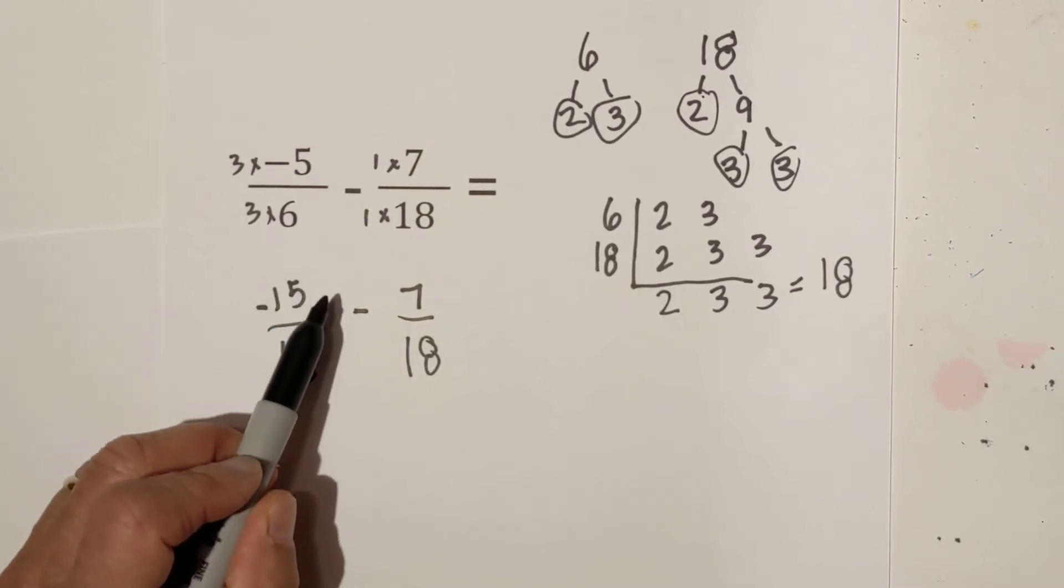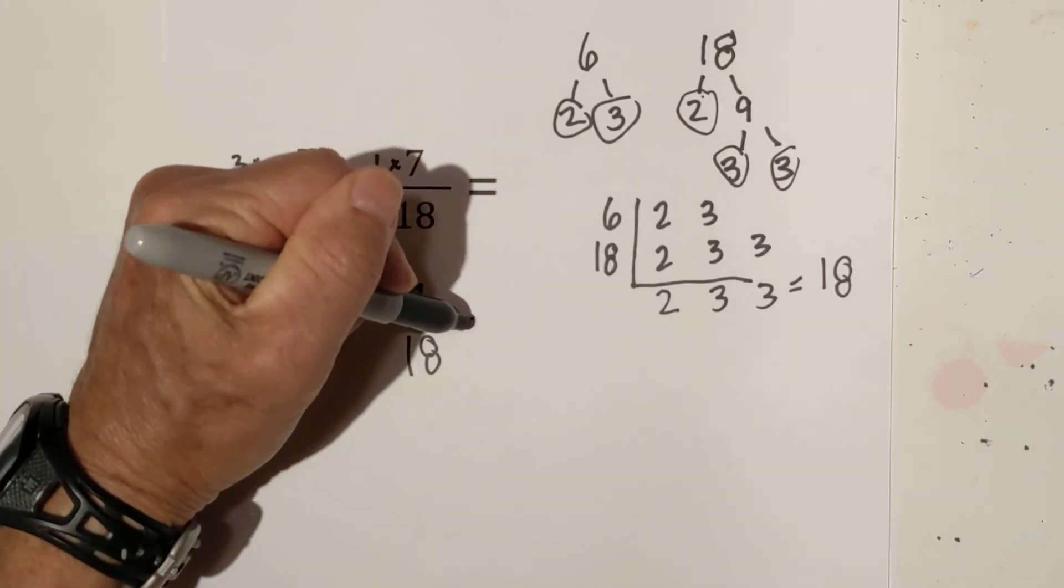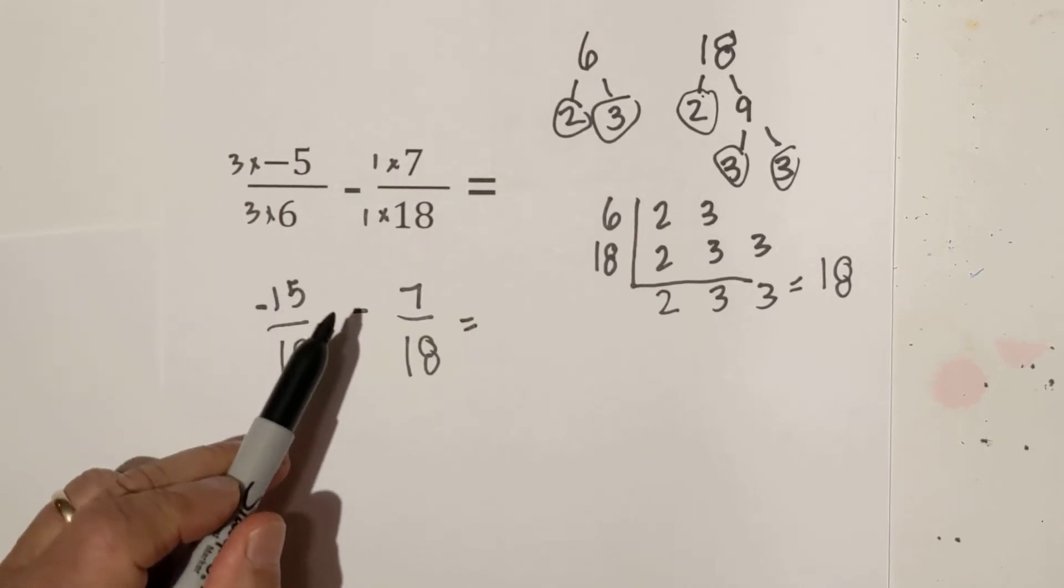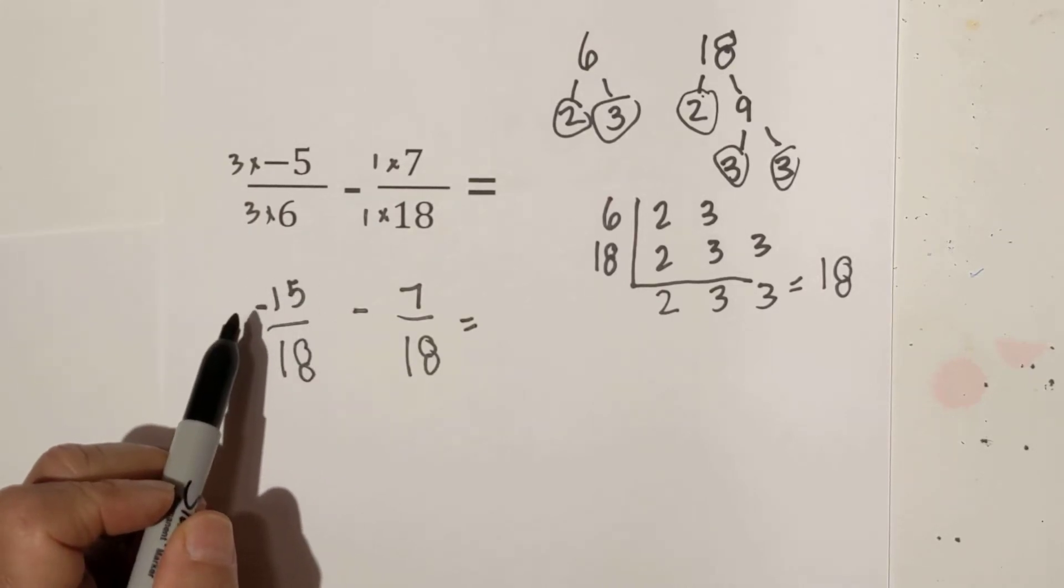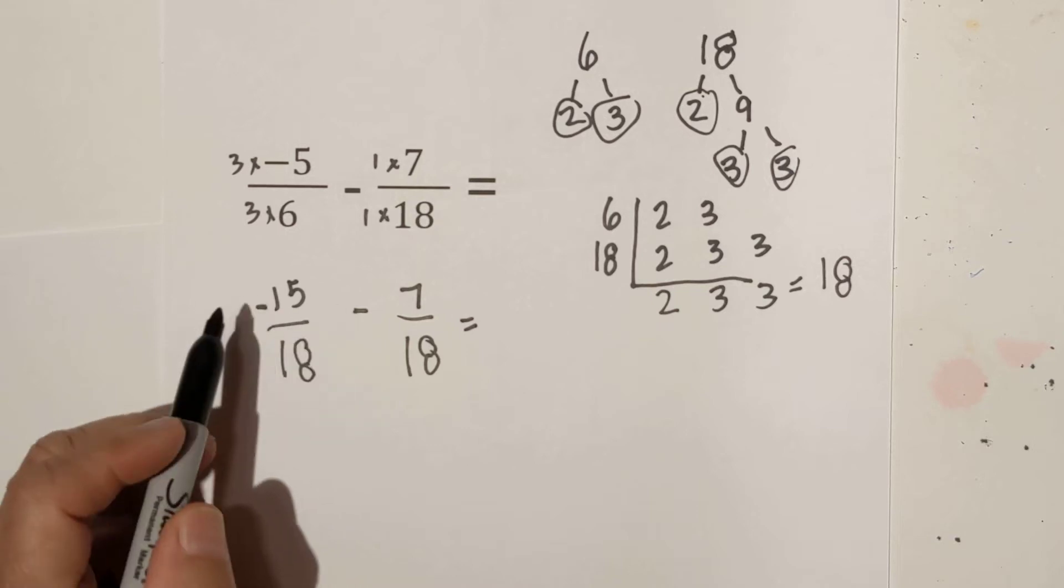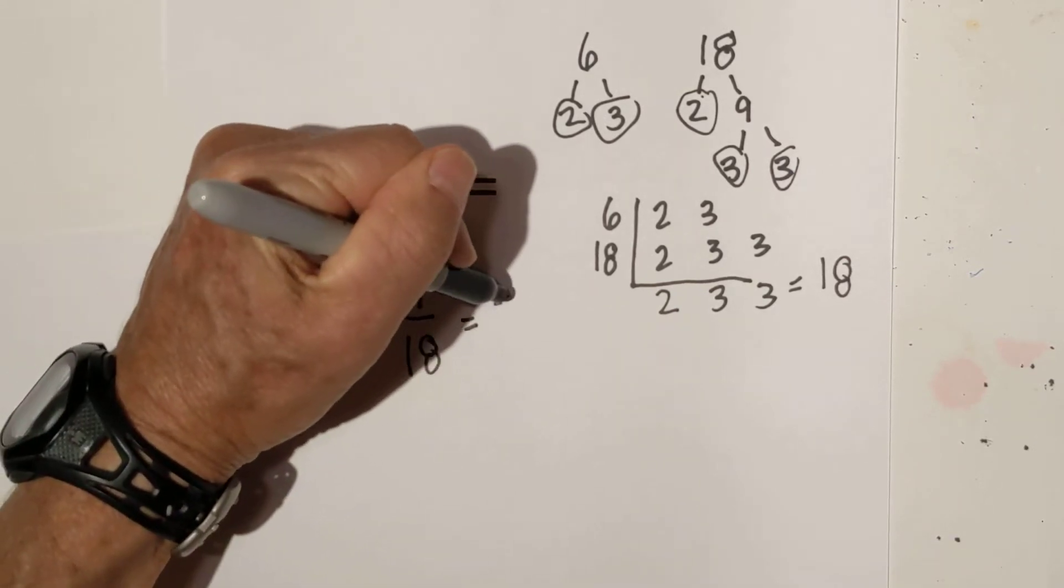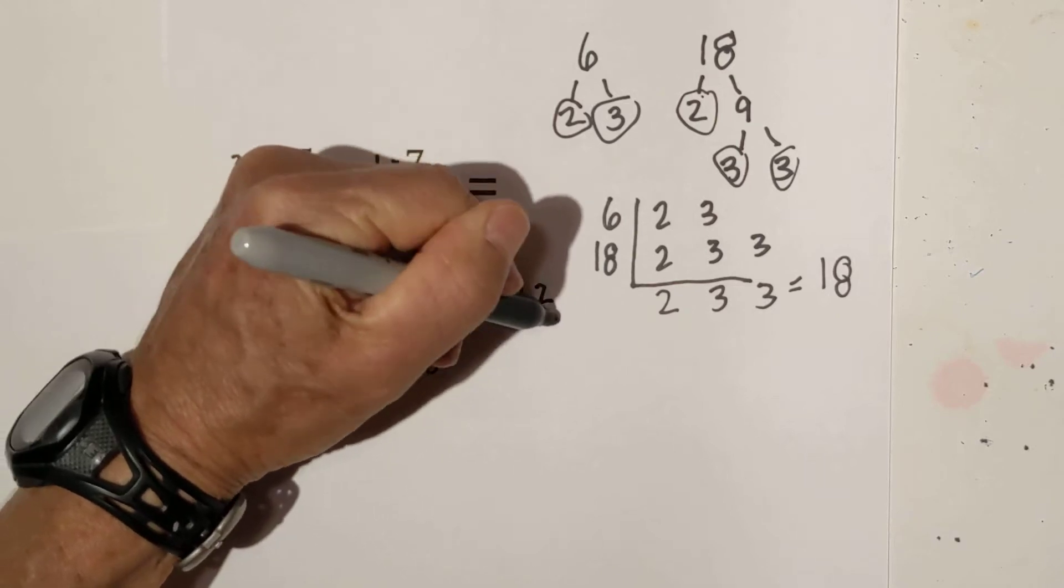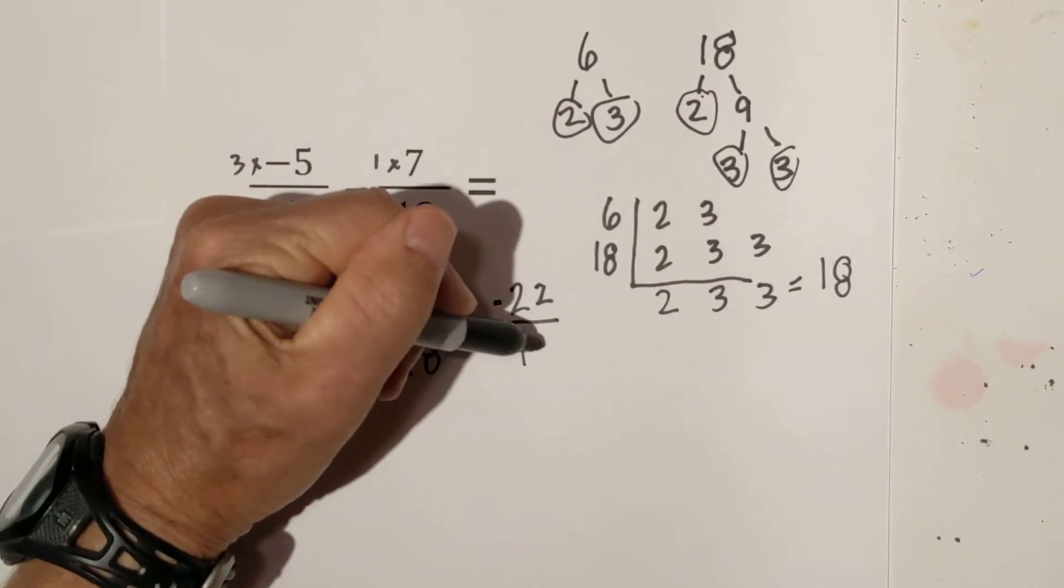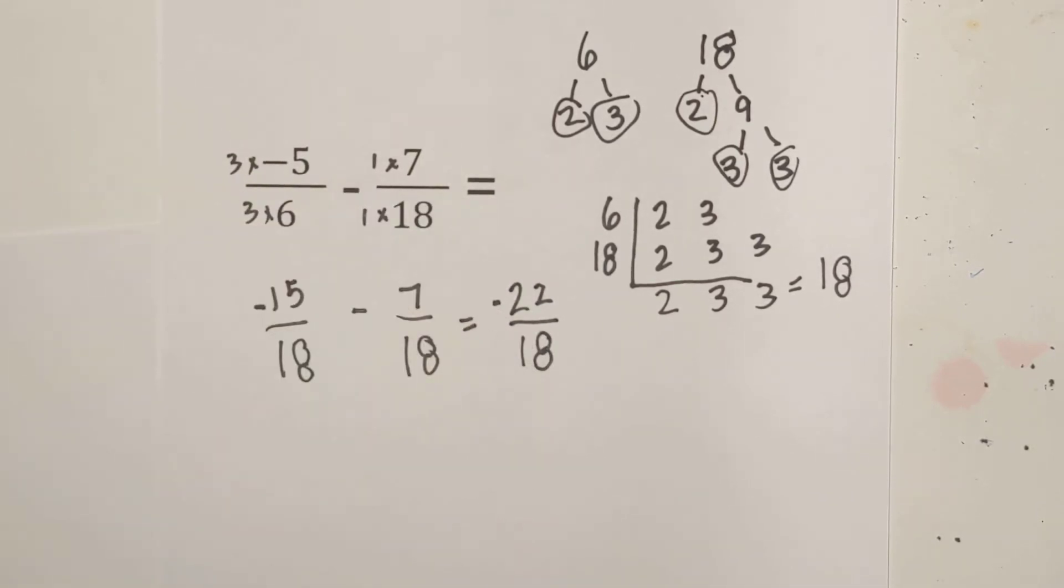So now what do we do with these signs? We have a negative and a negative. So that will be just like you are adding them. But you are going to keep the negative sign. So negative 15 and negative 7 is a minus or a negative 22. And you keep 18 as your denominator.